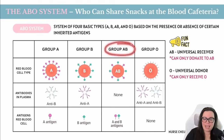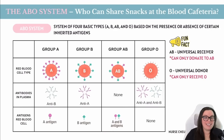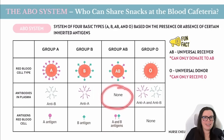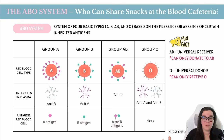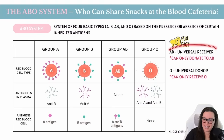Type AB blood has both A and B antigens, so it doesn't need to create any antibodies to protect itself against either. Because AB blood types don't make antibodies against A or B, they can accept A, B, AB, or O blood types — making AB people universal receivers.